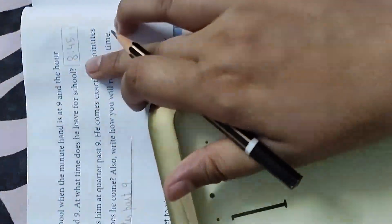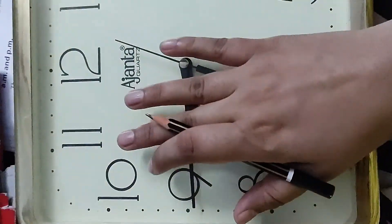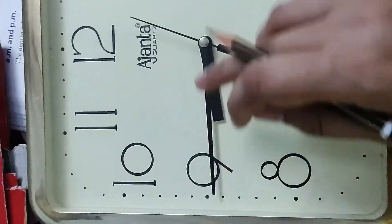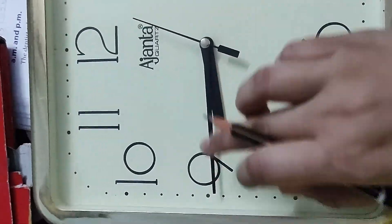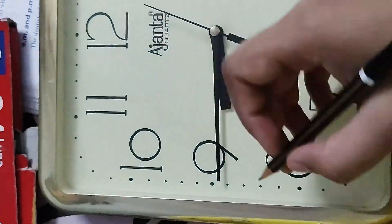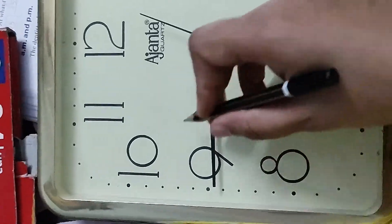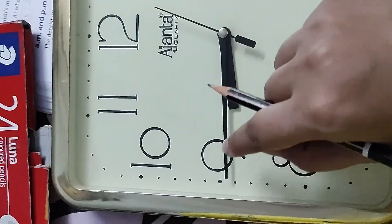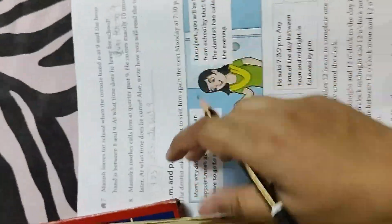If I want to write 8:45 in words — for the minute hand at 9 you write 'quarter to,' and from 8 and 9 you take the bigger number, which is 9. So there are 15 minutes left for 9 o'clock, and you write 'quarter to 9.'